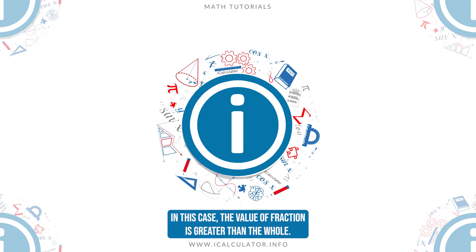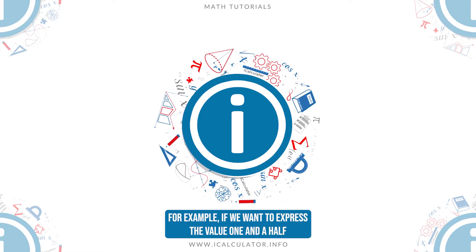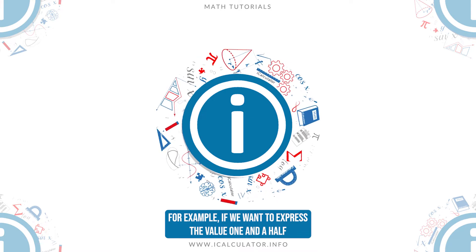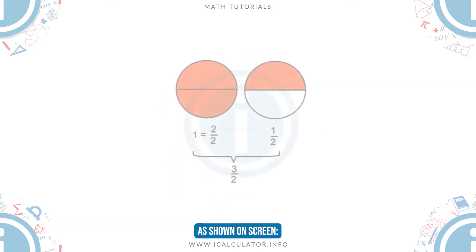In this case, the value of the fraction is greater than the whole. For example, if we want to express the value 1 and a half, we write it as three halves because this amount represents three halves of an item, as shown on screen.